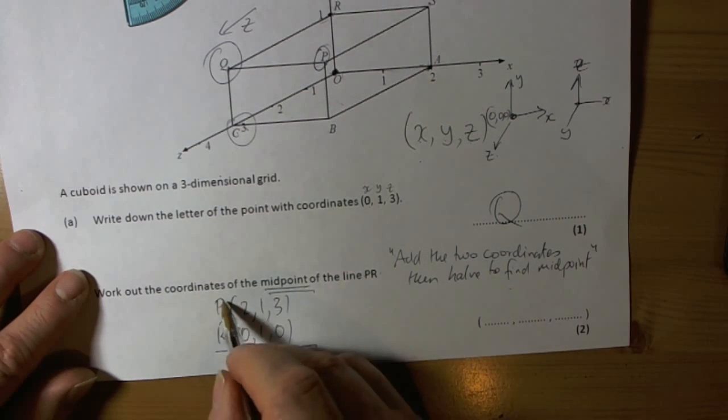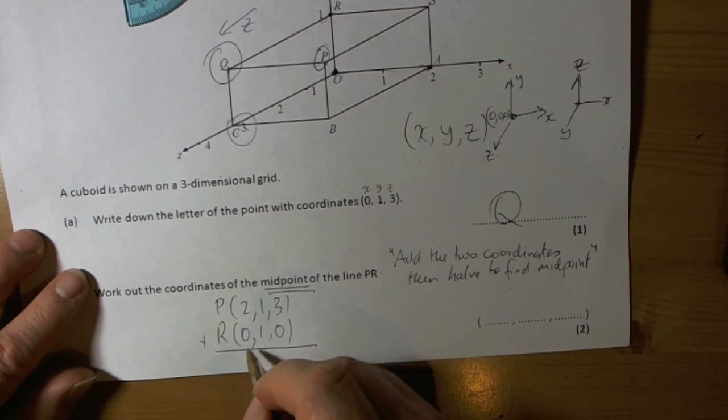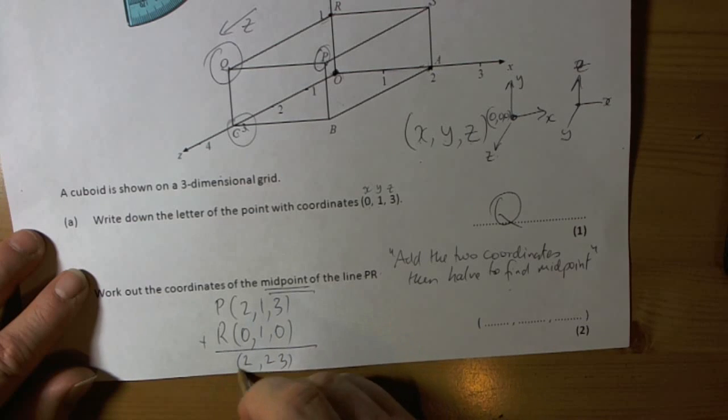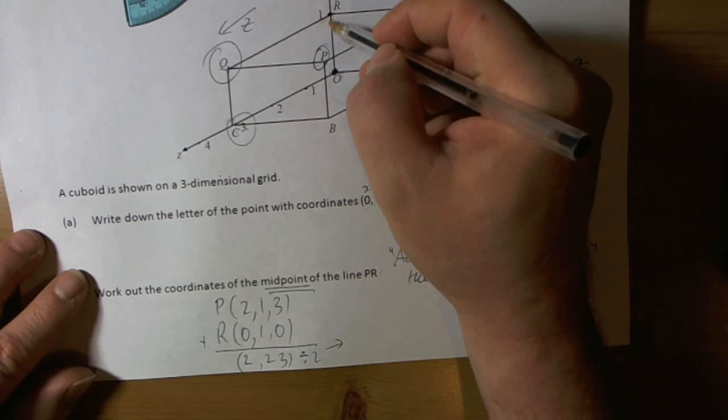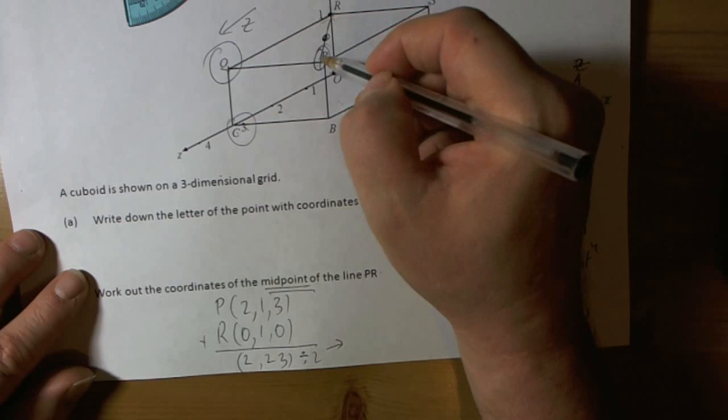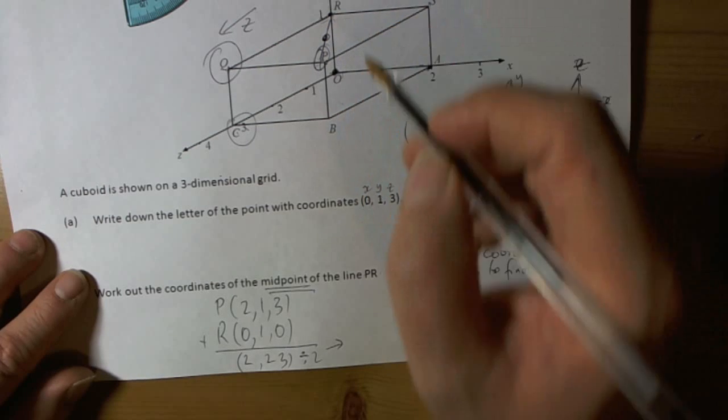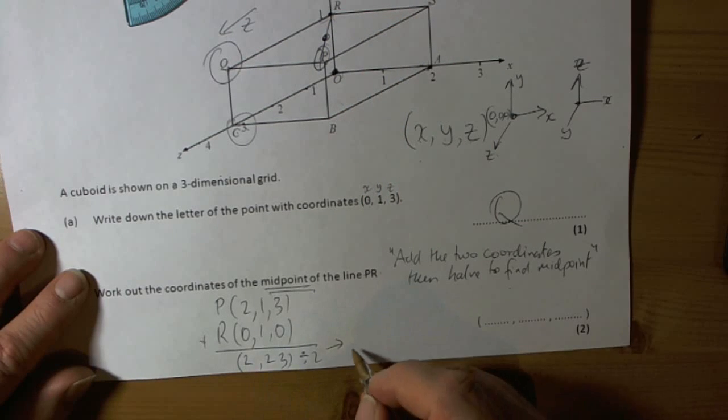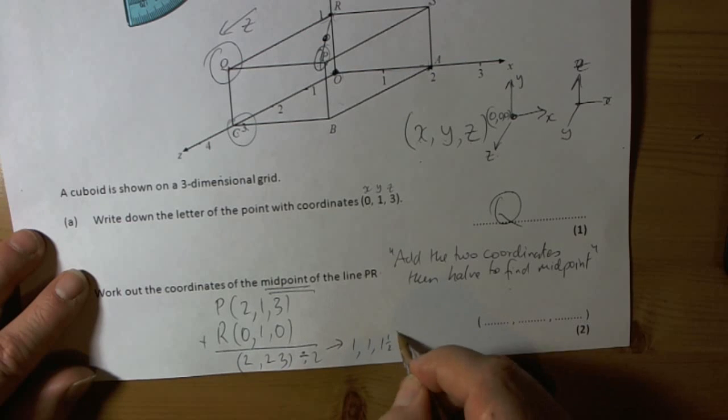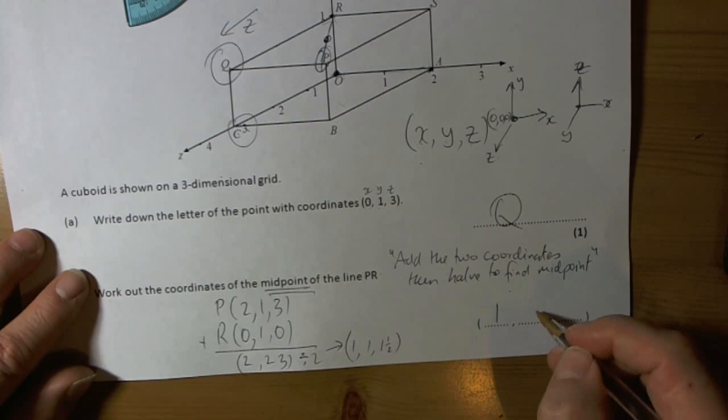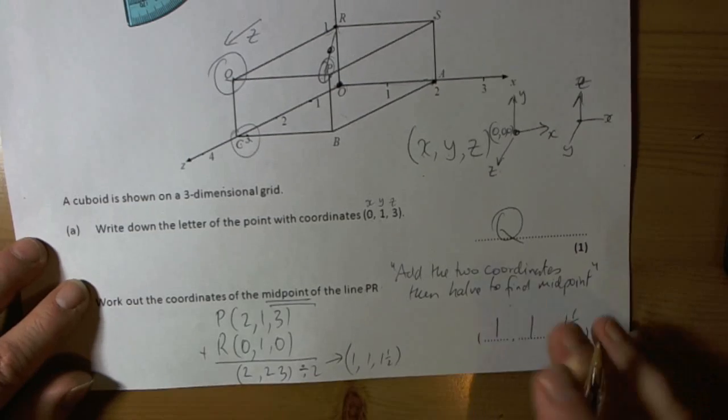So, the rule says that we add those two coordinates together: (2, 2, 3). We then divide by 2 to get the midpoint. In other words, we want to be in the middle of where the line joining P and R would be. So, if we half 2, we get 1; half 2, we get 1; half 3, we get 1.5. So, the coordinate would be (1, 1, 1.5).